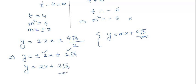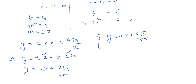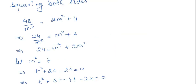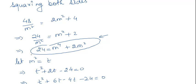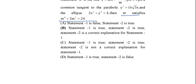Statement 1 is correct because y = 2x + 2√3 is indeed a common tangent. Statement 2 is also correct — we derived exactly m⁴ + 2m² = 24, and this equation is what we used to find the slope. Furthermore, Statement 2 is the correct explanation for Statement 1. Therefore the correct answer is option B: Statement 1 is true, Statement 2 is true, and Statement 2 is the correct explanation for Statement 1.